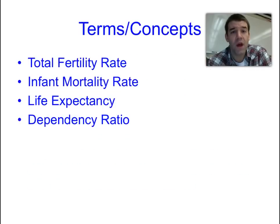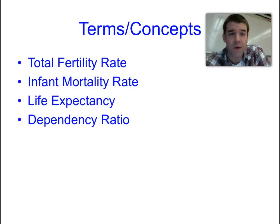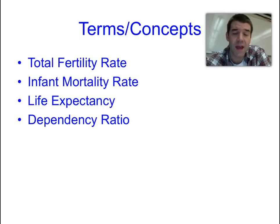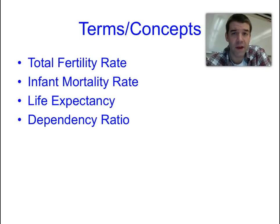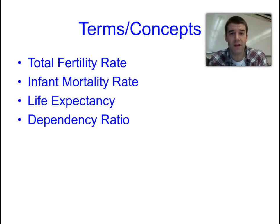To summarize, the key indicators covered in this video are total fertility rate, infant mortality rate, life expectancy, and dependency ratio. Hopefully you've got some good notes at this point. Bring your questions and clarification needs to class, and we'll address them there.